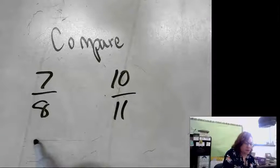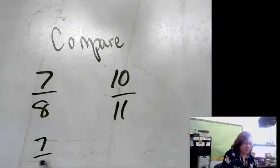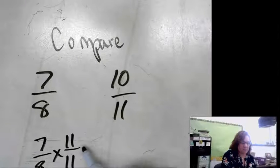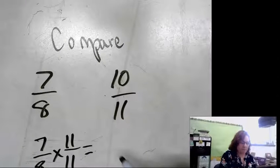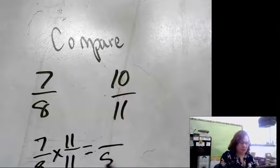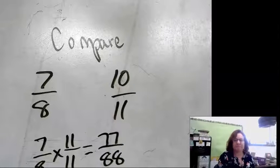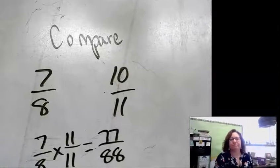So if I multiply 7 eighths times 11 elevenths, that gives me 77 over 88.